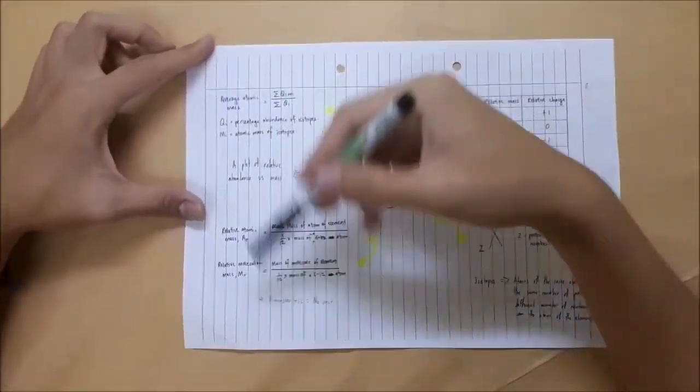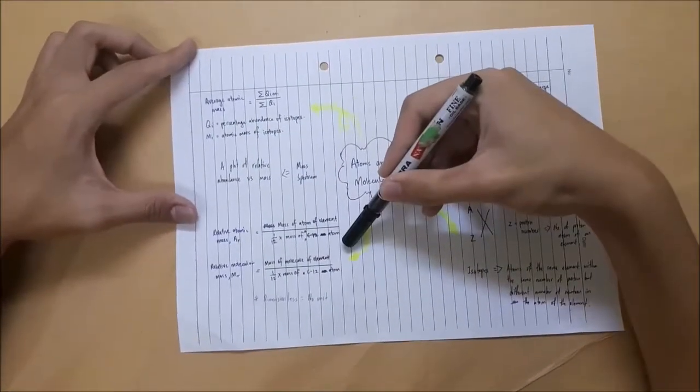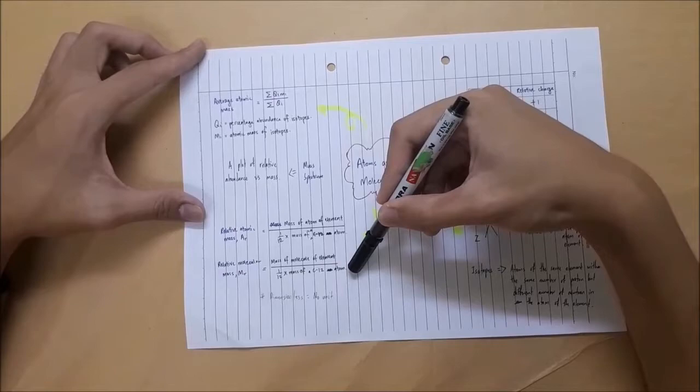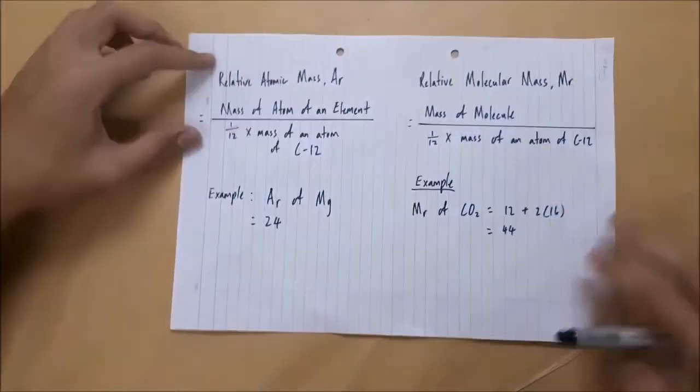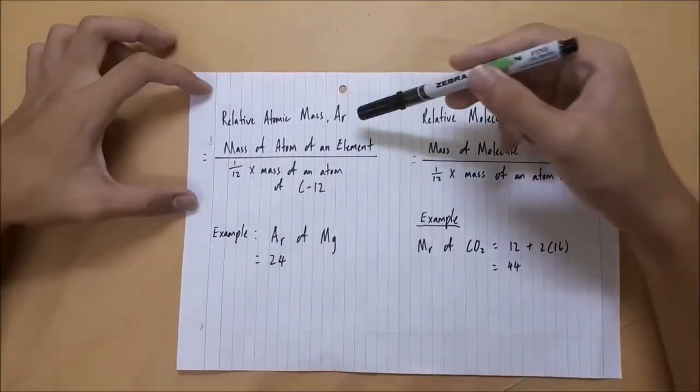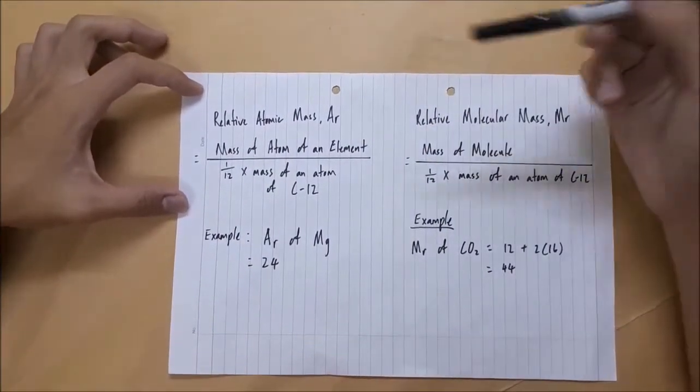Alright, so now I'm going to talk about the left part of this mind map, which consists of Relative Atomic Mass, Relative Molecular Mass, and also Mass Spectrum and how to calculate the average atomic mass. So let's get started. First of all, I will introduce about what is Relative Atomic Mass.